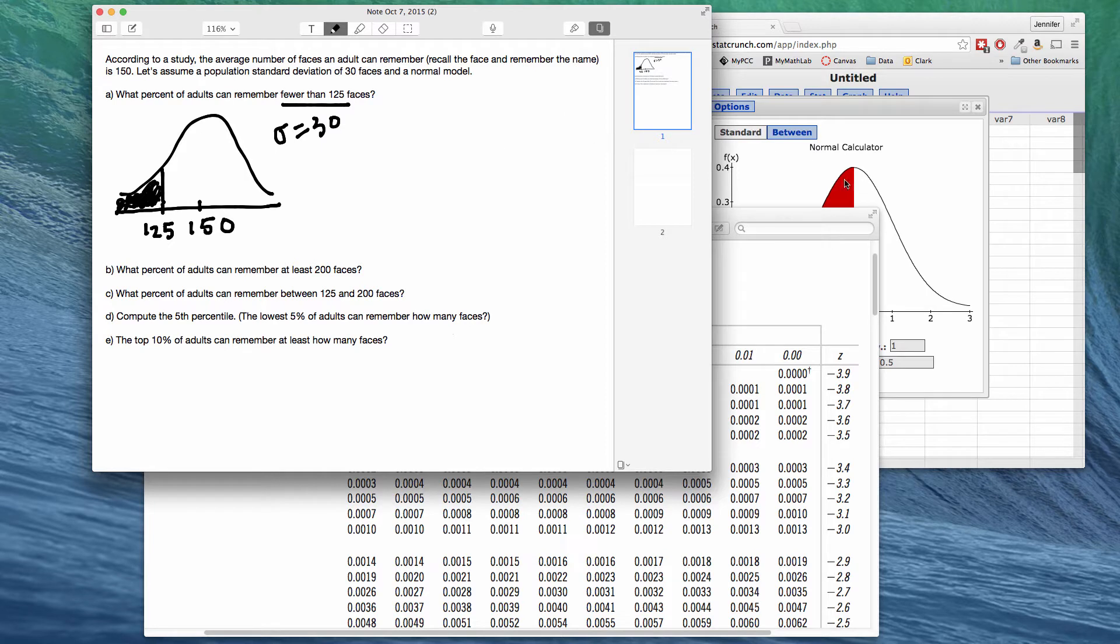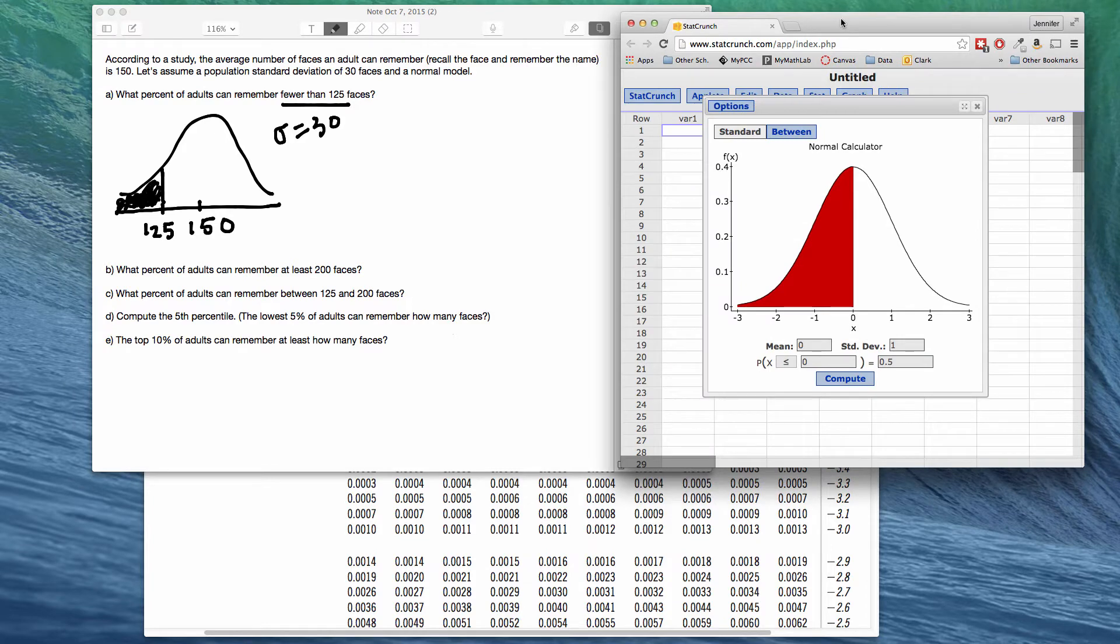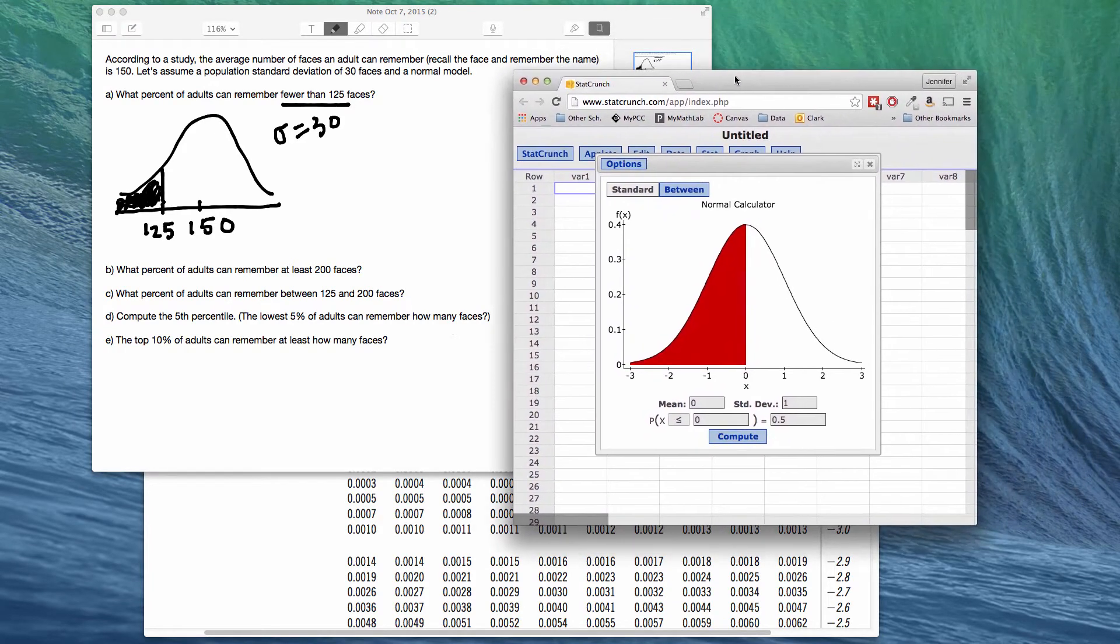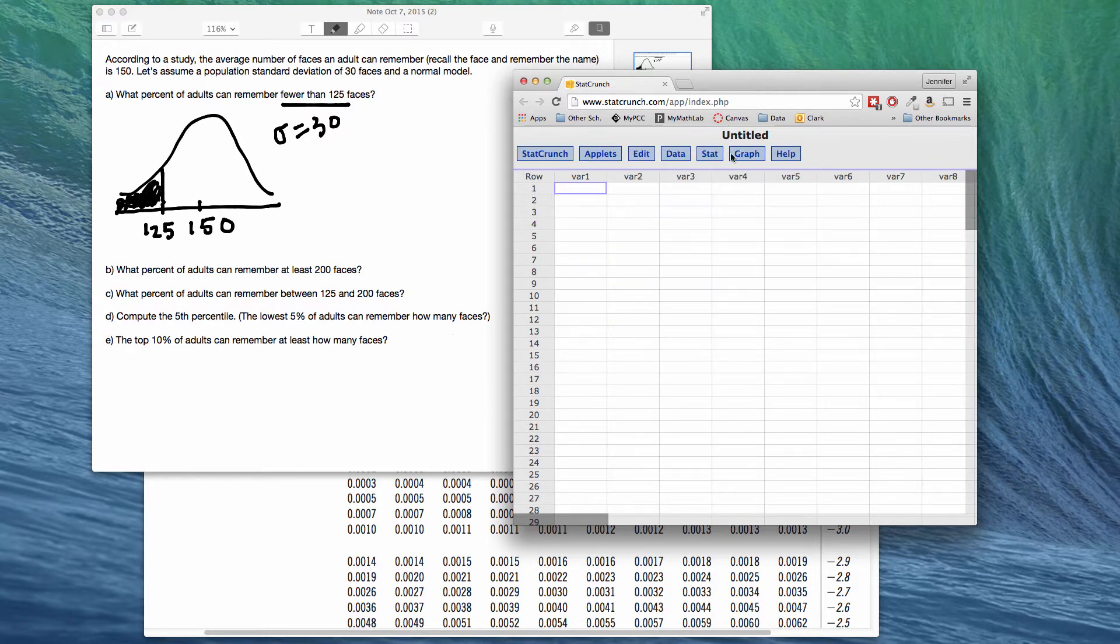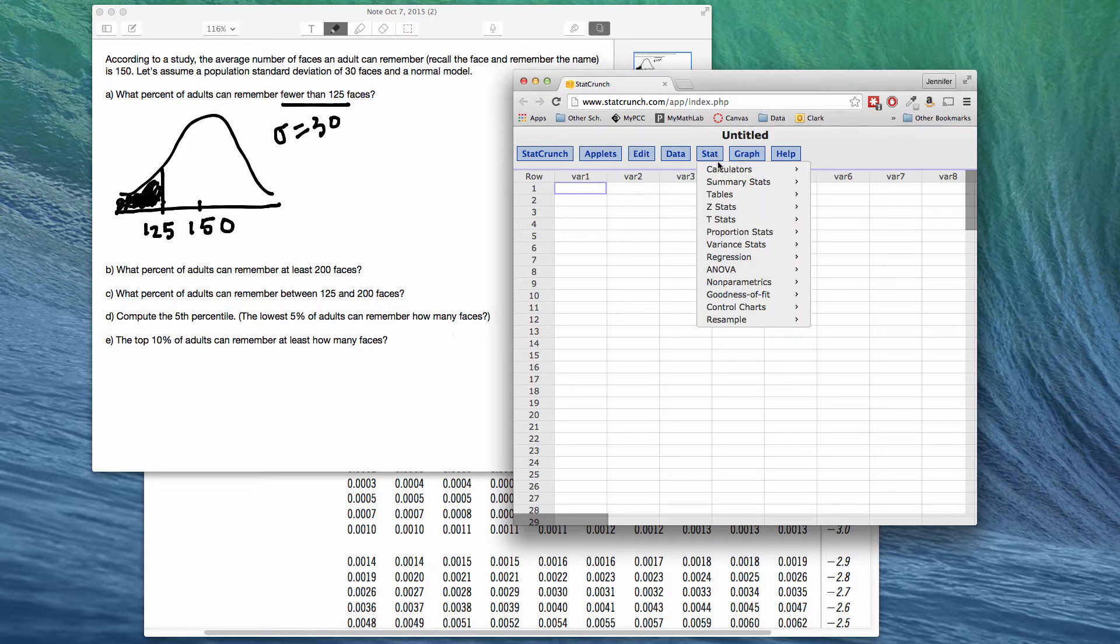So we can use a couple different ways to find this probability. One, we could go to the normal table, work this by hand. Two, we can go to StatCrunch. So let's go to StatCrunch first and get an answer and then we'll go back and work with the normal table. So I have StatCrunch pulled up here. When you open up StatCrunch, you want to go to Stat, Calculators, and then down all the way to Normal because we have a normal model.